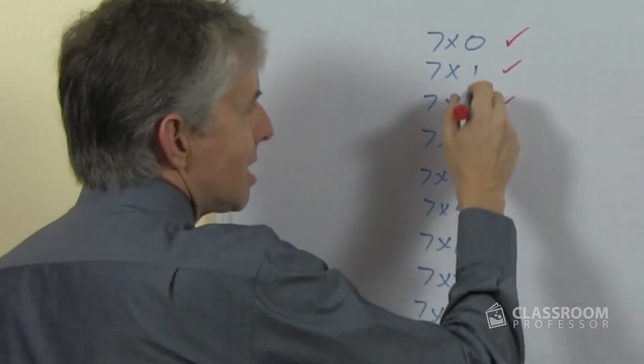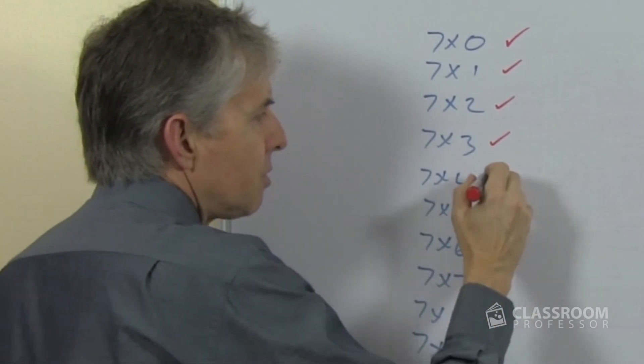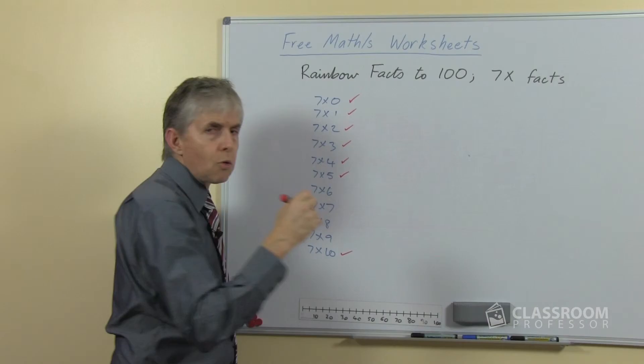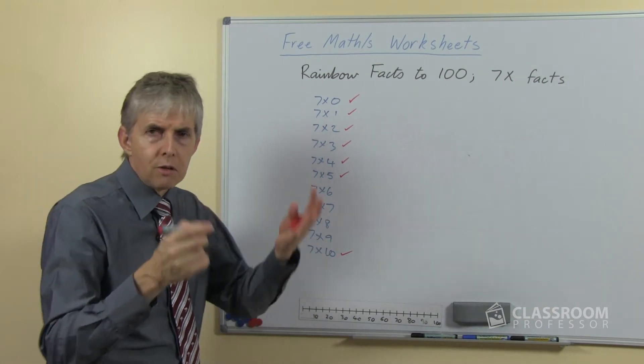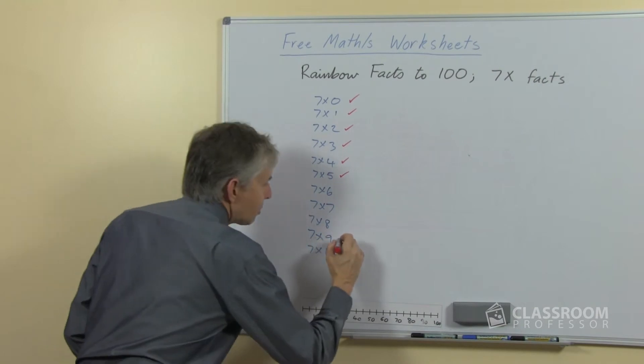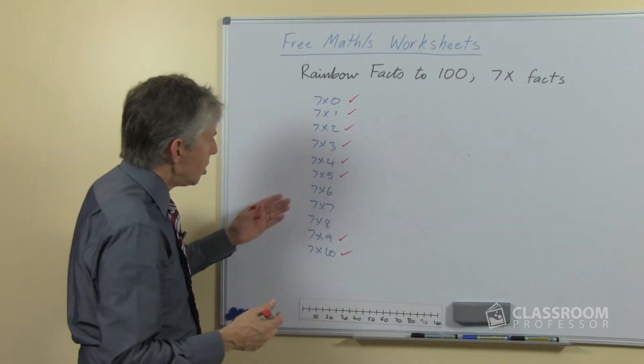We know seven threes, because that's a bit more than seven twos, we add another seven. Seven fours we can get from seven twos by doubling again. Seven fives, the five times are all easy, they end in zero or five and there are ways to think about which one the answer is. And seven nines, we've got lots and lots of patterns, we can use our fingers. Look at that.